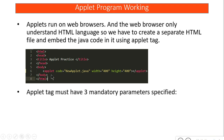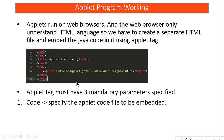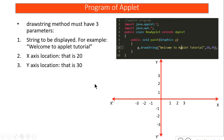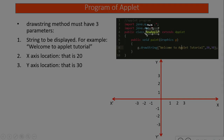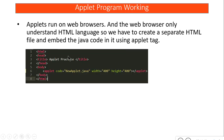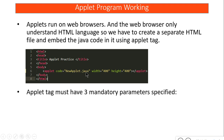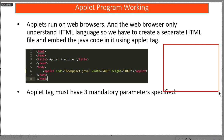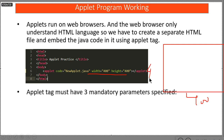Along with your Java file you need this HTML file. When writing the applet tag you need three mandatory attributes: first, code — this is your Java file, for example 'NewApplet.java'; second, width — for example 400; third, height — for example 400. So 400 is the width and 400 is the height, and this window will open with your applet code executed inside that area.